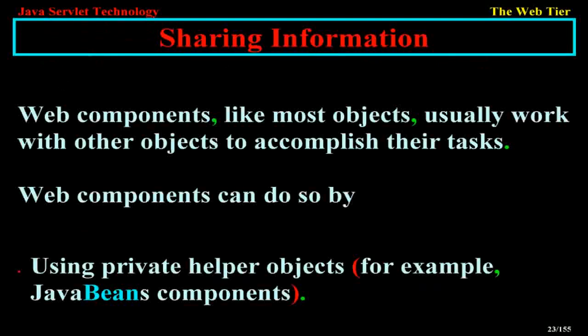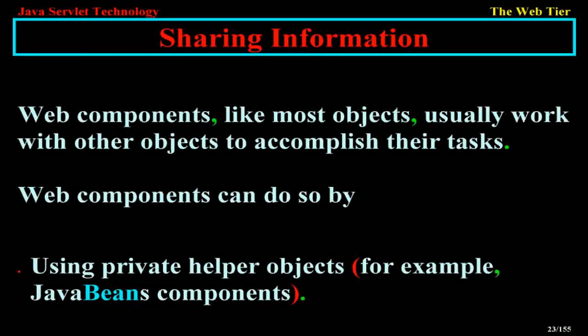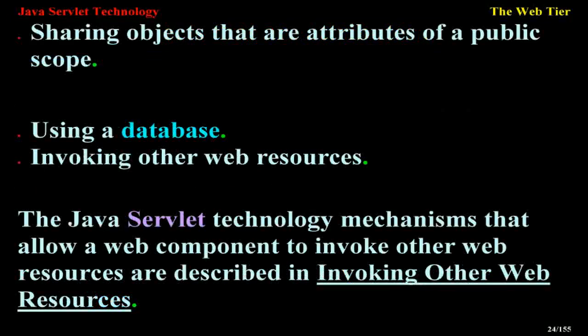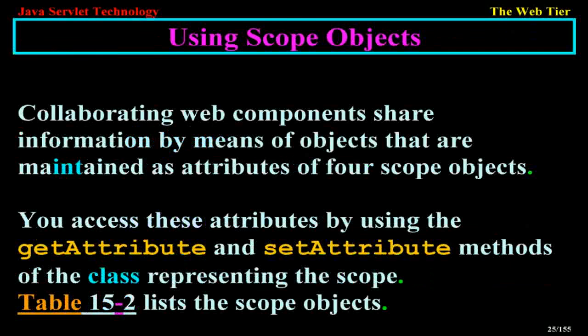Sharing information. Web components, like most objects, usually work with other objects to accomplish their tasks. Web components can do so by using private helper objects, for example JavaBeans components, sharing objects that are attributes of a public scope, using a database, or invoking other web resources. The Java servlet technology mechanisms that allow a web component to invoke other web resources are described in invoking other web resources.